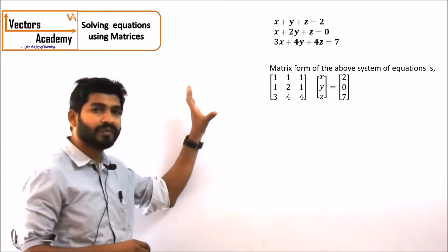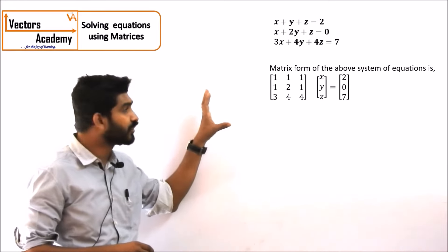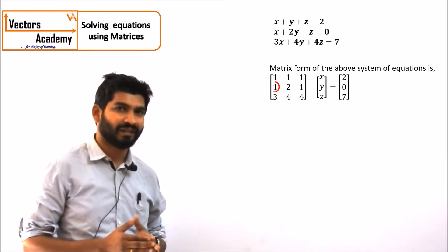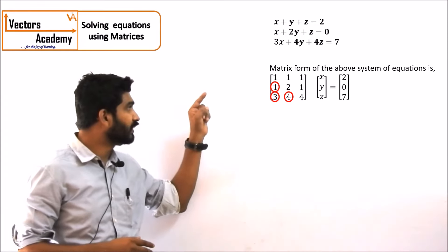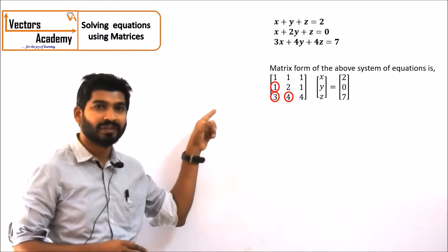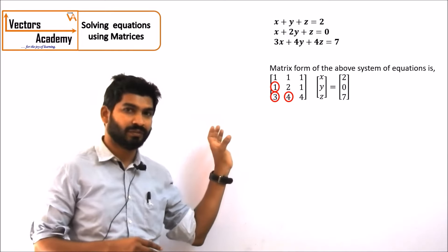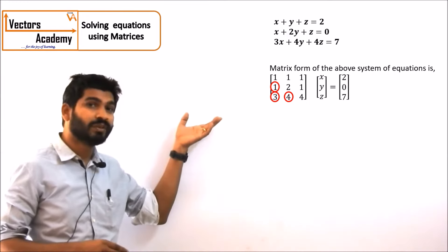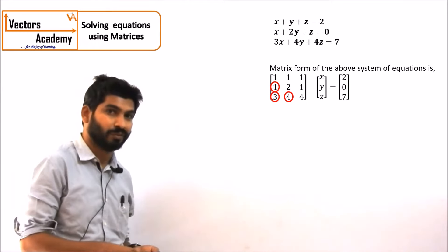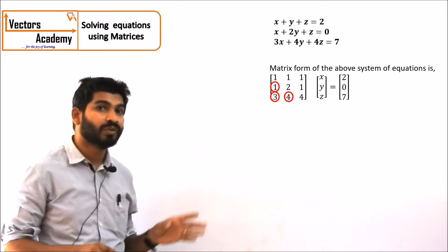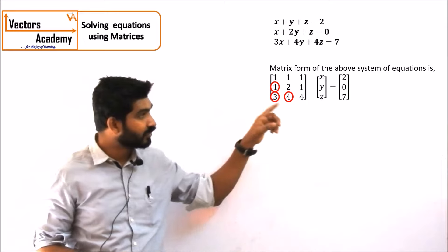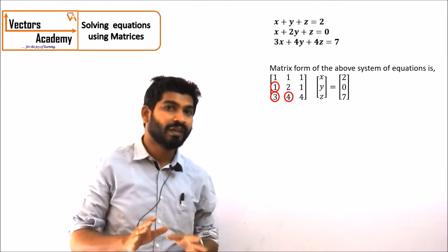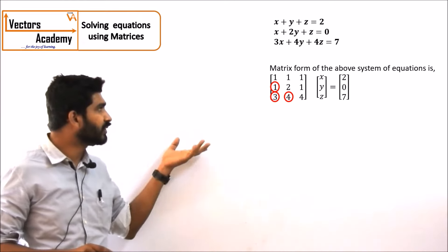This first matrix — the matrix of coefficients — is to be reduced to an upper triangular matrix. It means these three numbers should be 0. You have to reduce this into an upper triangular matrix using row transformations. You cannot use column transformations as the matrix on the right-hand side contains just one column, so we will be using row transformations.